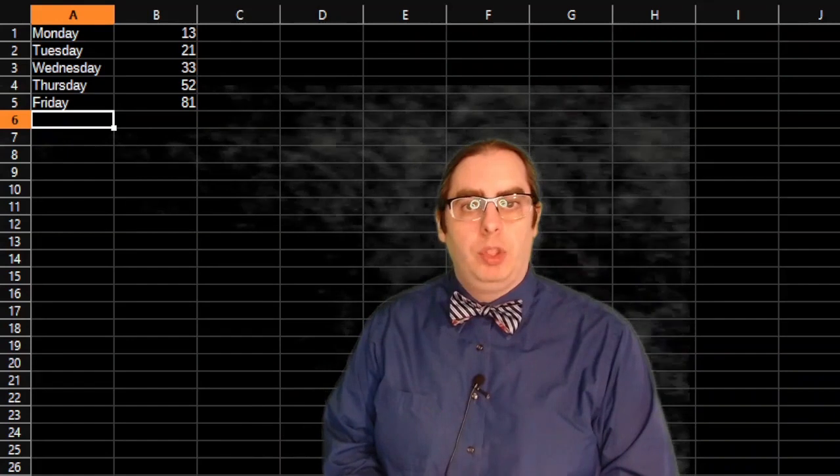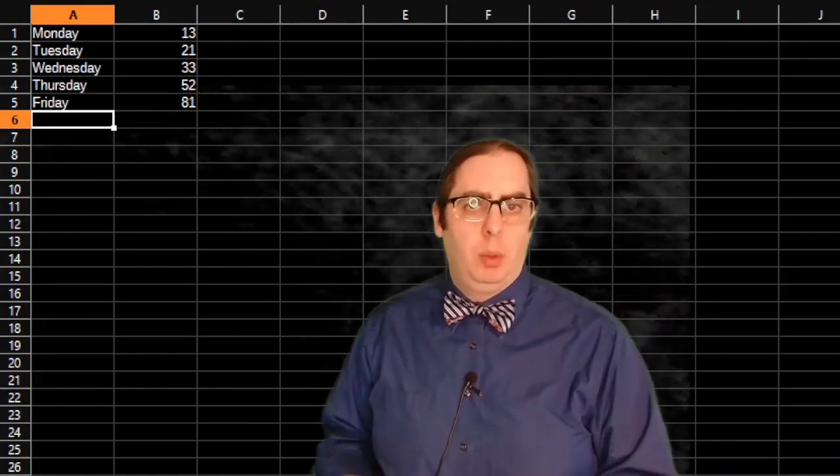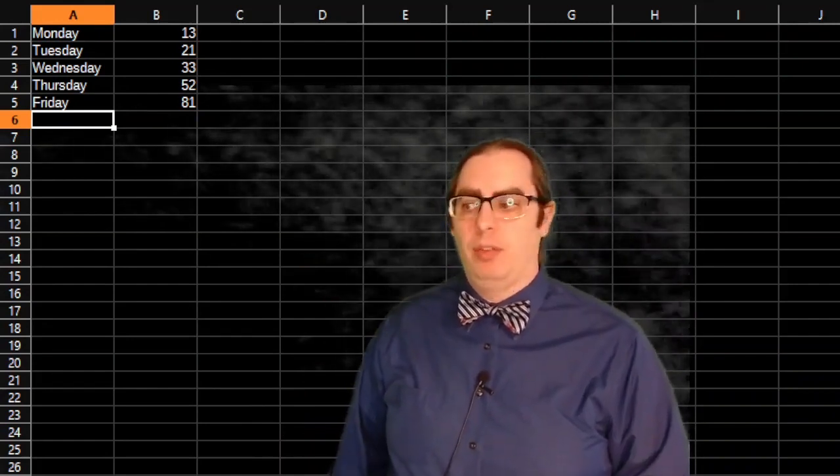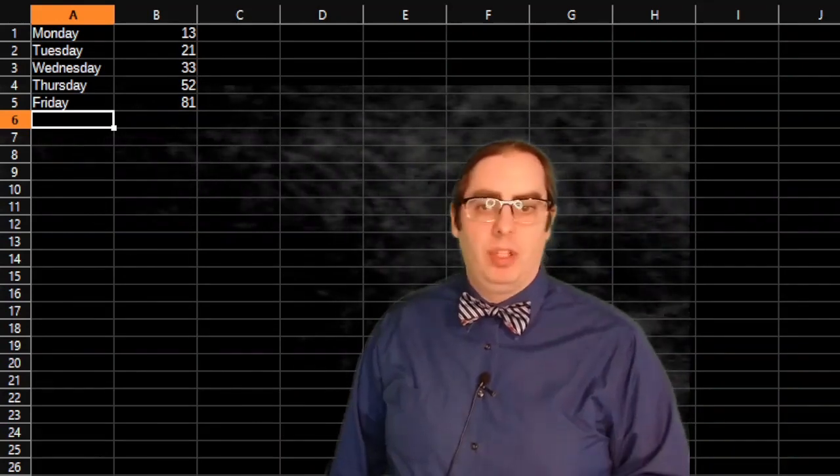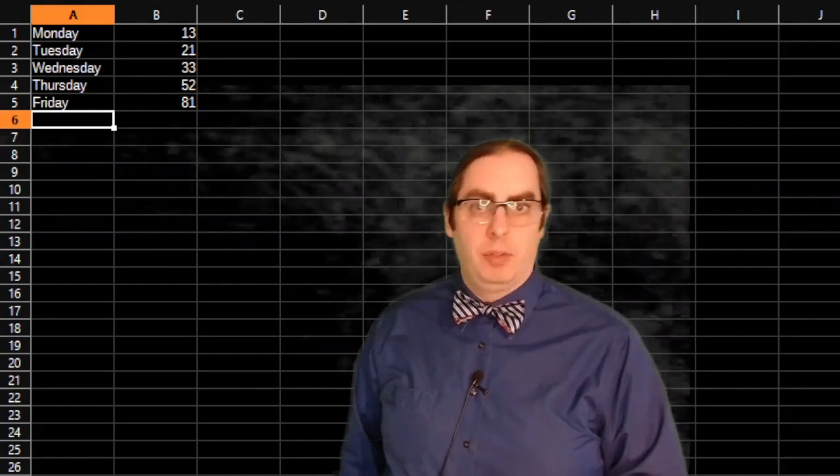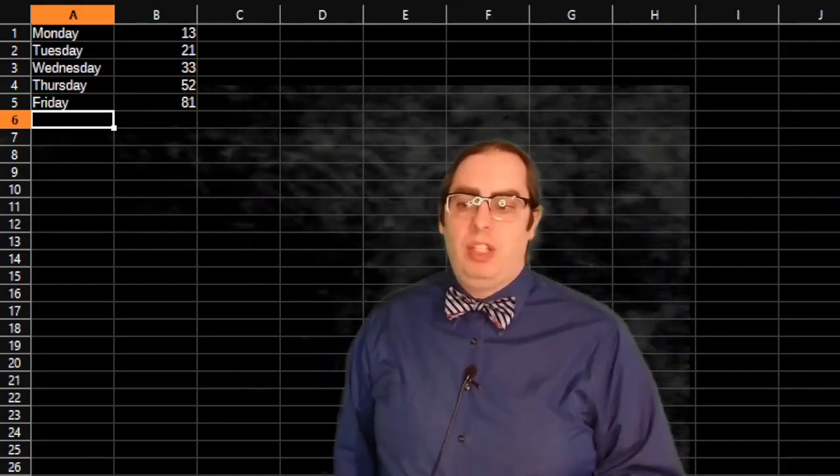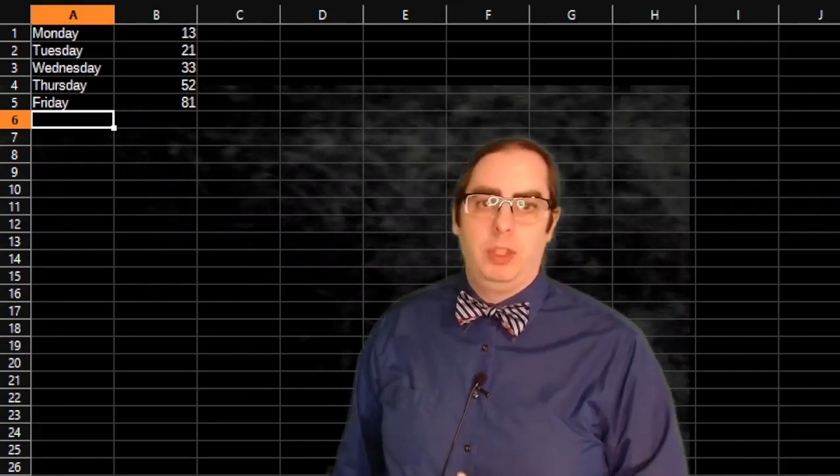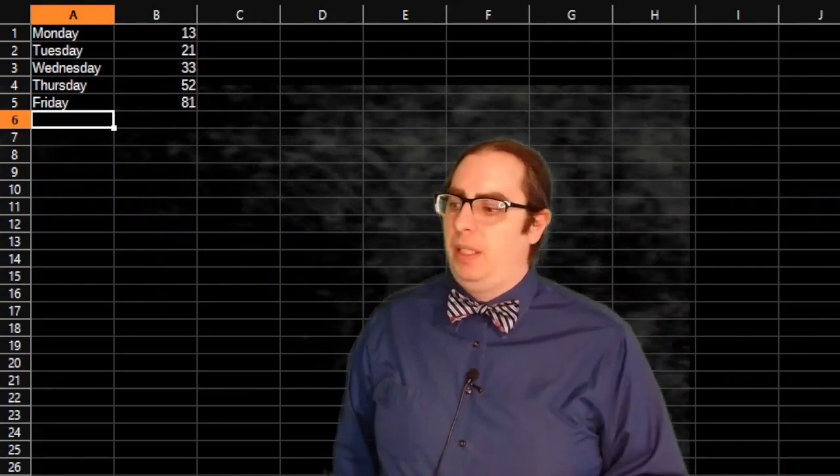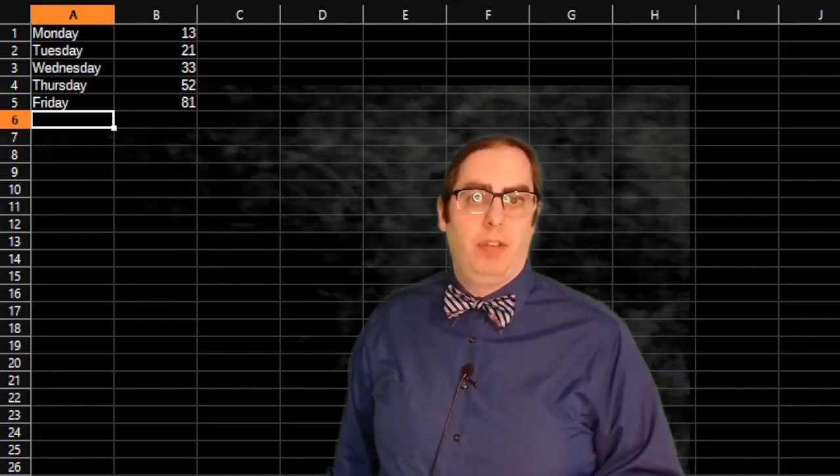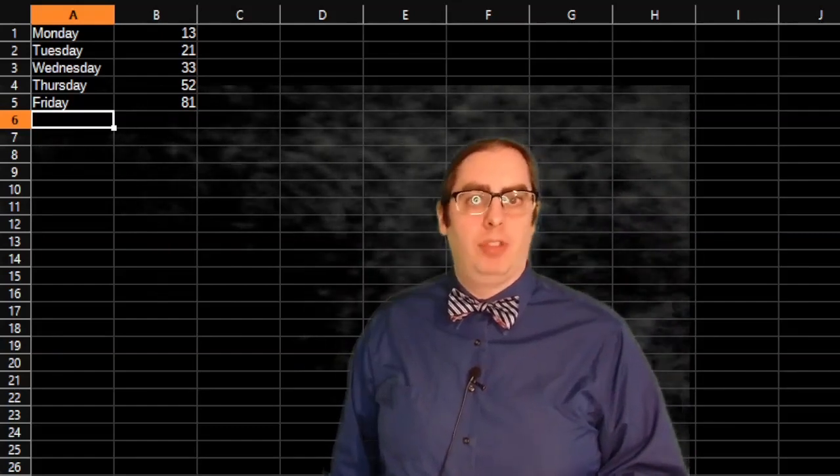Unlike the categorical frequency distribution we looked at in the previous video, notice that this one has ordinal data. In the last video, we were looking at colors of candy-coated chocolate, which came in nominal data form. Being ordinal data is going to open up a few more possibilities for us. And I'm here in spreadsheet software instead of trying to draw things because my goal here is to talk about a couple of graphs and charts.